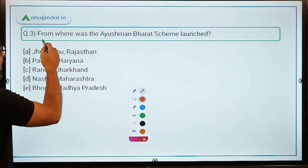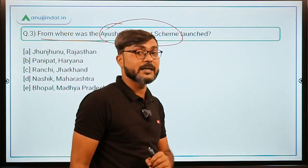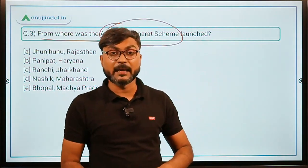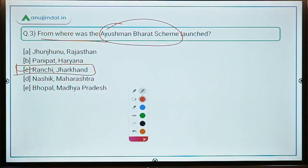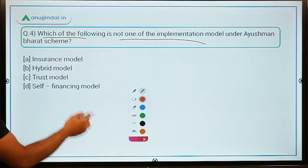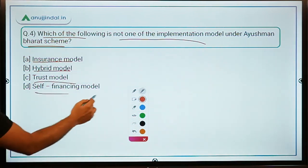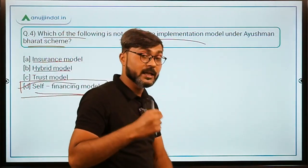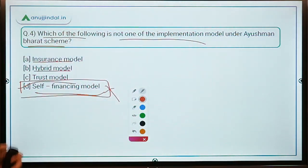Question three: From where was Ayushman Bharat launched? The location is very important. Just like Poshan Abhiyan was launched from Jhunjhunu in Rajasthan and Beti Bachao Beti Padhao from Panipat in Haryana, Ayushman Bharat was launched from Ranchi in Jharkhand — option C. Question four: Which is not an implementation model under Ayushman Bharat? The three models are Insurance, Hybrid, and Trust. Self-financing is not a model, so option D is correct.